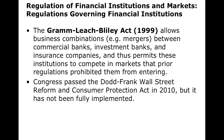In 1999, the Gramm-Leach-Bliley Act allowed business combinations or mergers between commercial banks and investment banks, insurance companies, and permitted these giant institutions to work together. The argument was that these institutions were uncompetitive worldwide because other countries allow them to combine. When they did combine, they started doing aggressive things that put the whole system at risk. Big banks like Bear Stearns went bankrupt, risking everyone's money at all levels of the economy.